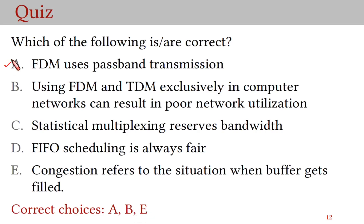A is correct: FDM uses passband transmission. B is also correct: using FDM and TDM exclusively results in poor network utilization because of a lot of idle time between transmissions. Statistical multiplexing does not reserve bandwidth — it allocates resources on demand. FIFO is not fair when some sources start to transmit aggressively. Congestion refers to the situation when buffers get filled. That's all in this video — see you next time.